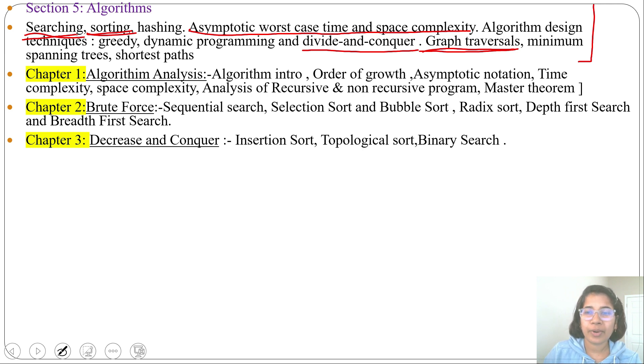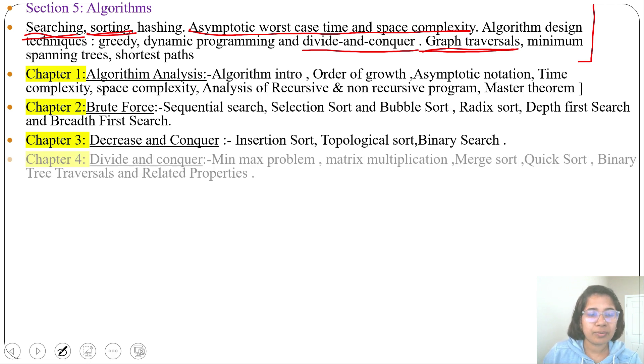Next, Chapter 4: Divide and Conquer. We are dividing problem into subproblems then we are trying to solve. Min-max problem, matrix multiplication comes under divide and conquer, then merge sort, quick sort comes under sorting, binary tree traversal and related properties that comes under divide and conquer.